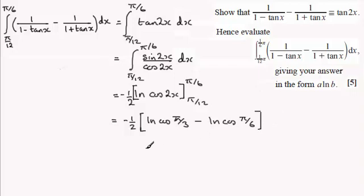Now working this out we've got minus half at the front, and the cosine of π/3 is a half so you have the natural log of a half. And then we've got minus, and the cosine of π/6 is root 3 upon 2, so you have the natural log of root 3 upon 2.